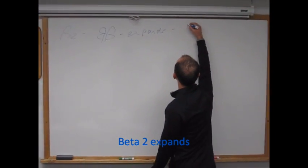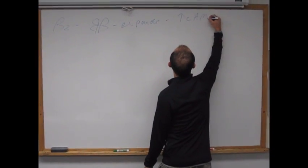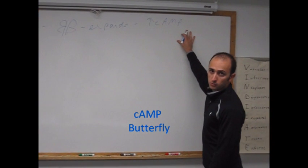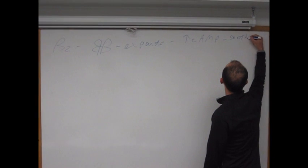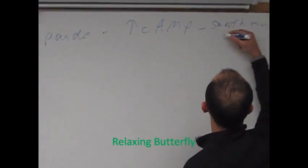So what does beta 2 do? Really it's expanding cyclic AMP, increasing. That's going to relax smooth muscle in a lot of places. Smooth muscle relaxation.